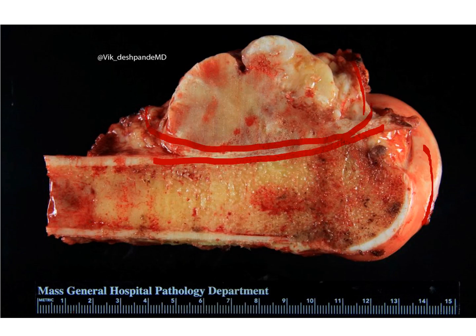The other thing to highlight is that the surface shows a cartilaginous area. You don't always see this, and when you do, it's never as prominent as in this case. The surface cartilage is particularly prominent here.